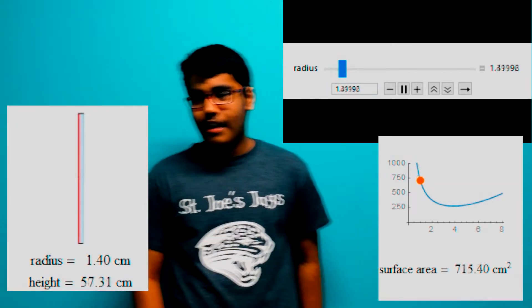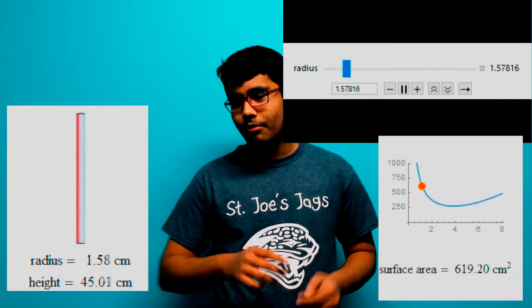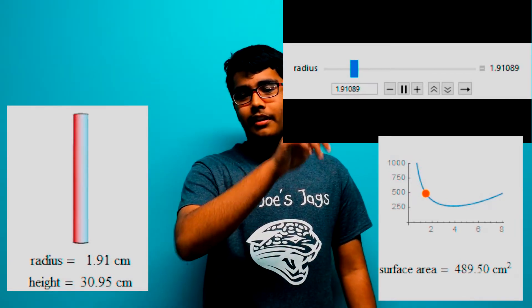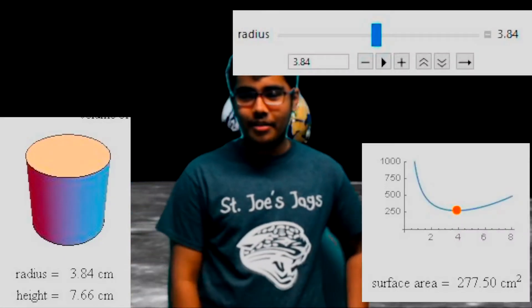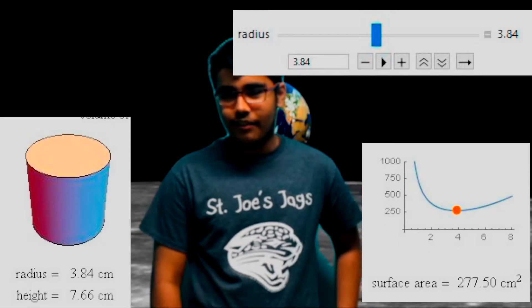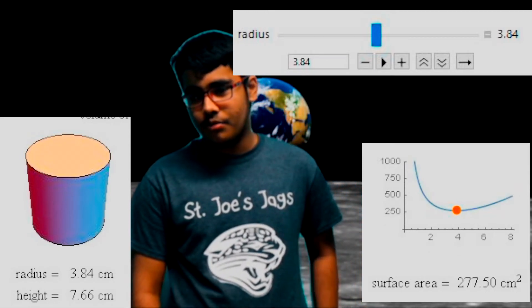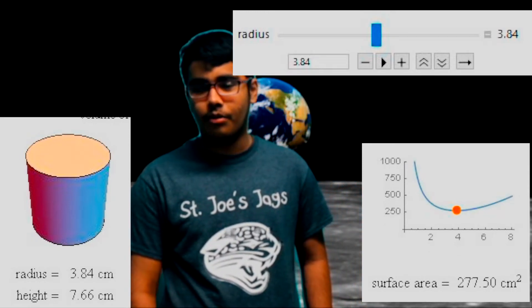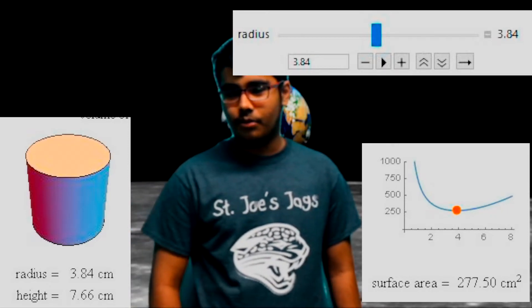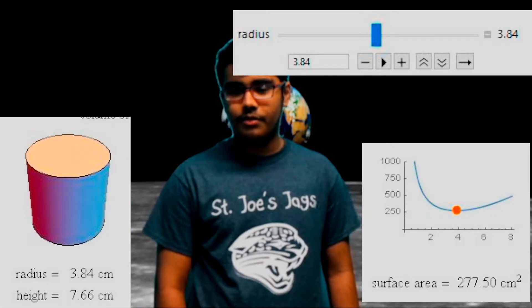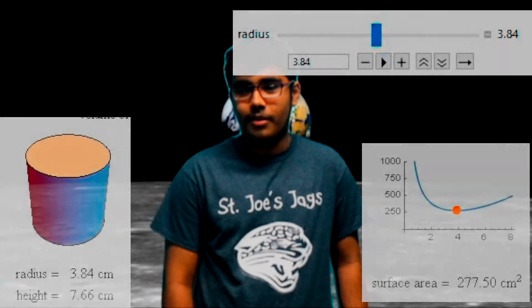Watch the graphs and sliders. As you might notice, when the diameter equals the height, we get the least surface area, which is around 277.5 cm² for the 355mL can. We are supposed to apply this rule for a 250mL can or box, whichever is best. So, let's find out.